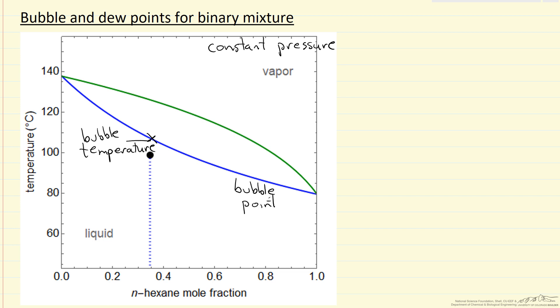If we look at the other case where we have a vapor, so we're at high temperature and we lower the temperature, then at some point we hit the dew point and the first drop of liquid forms. This then would be the dew temperature for this pressure and this composition.